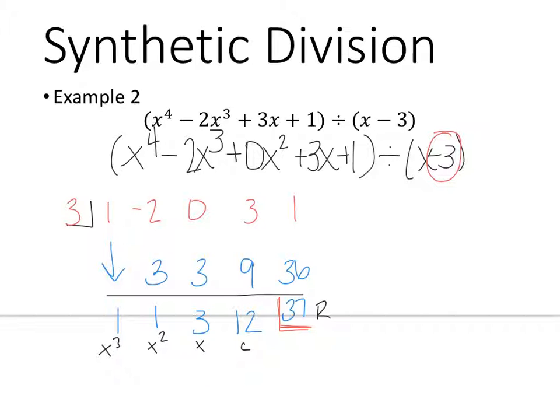So I'm always just going to count backwards that way to get what each of these terms are. So my final answer is 1x to the 3rd plus 1x squared plus 3x plus 12 plus 37 all over x minus 3.